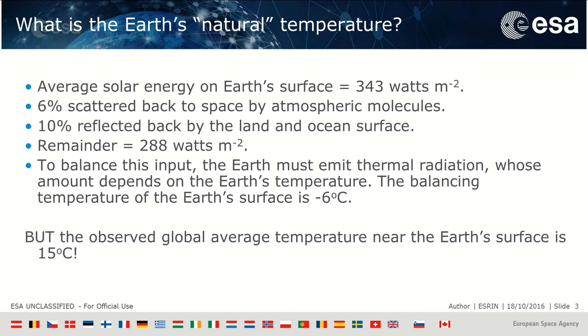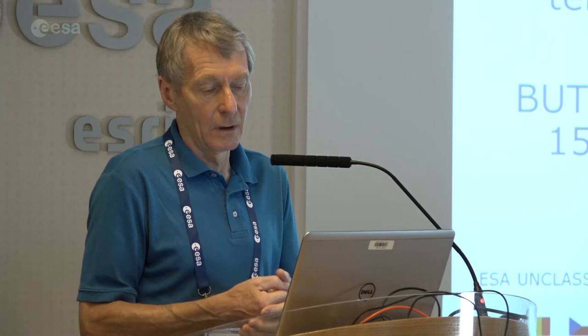Let me just make a comment about this. This is not the Earth in equilibrium. The Earth in equilibrium would not have the atmosphere it has now — it wouldn't have any oxygen for a start. It would have an atmosphere which is mainly about 97% carbon dioxide. It would be a very warm planet, not as warm as Venus, but very warm. The reason it doesn't have that atmosphere is because of life. So we have this anomaly between the Earth's minus 6 degrees and 15 degrees — where does it come from?